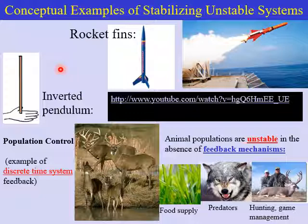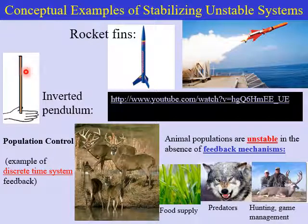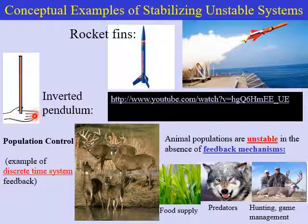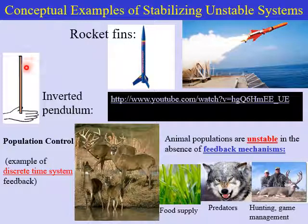Another example of stabilizing an unstable system is something you can do at home — it's called the inverted pendulum. Take a stick such as a ruler, or it's a lot easier with a longer stick such as a meter stick or a broom, and balance it on your hand. If you don't move your hand, the stick will quickly fall over because the system is inherently unstable. But by using feedback — by watching which way the stick starts to fall — you can make quick motions with your hand and actually get the inverted pendulum to stabilize and balance.